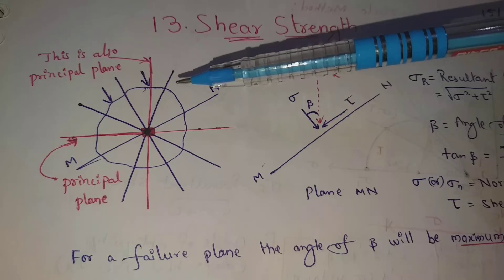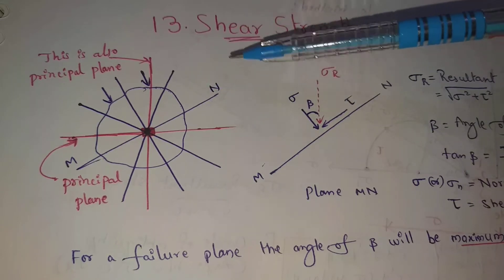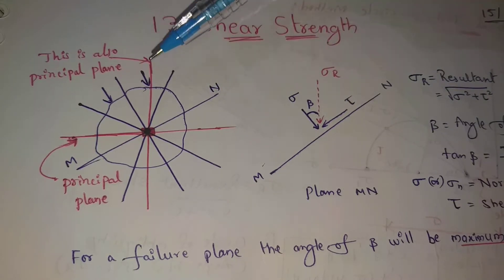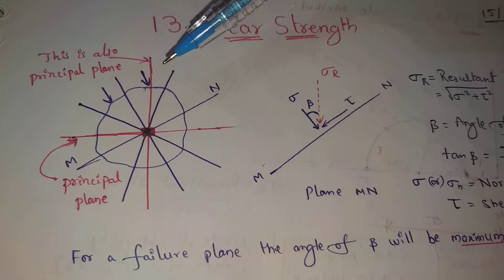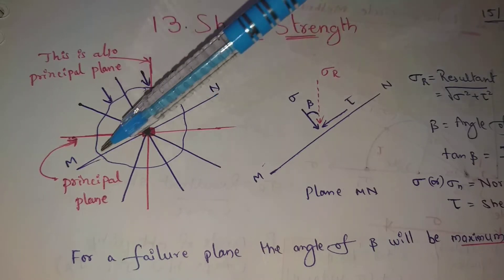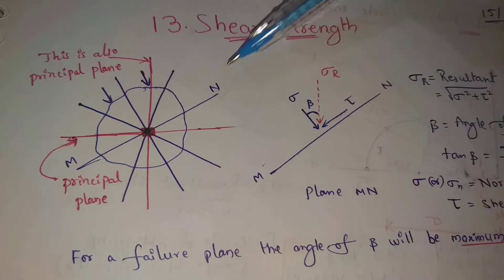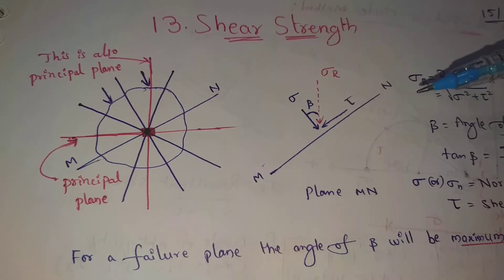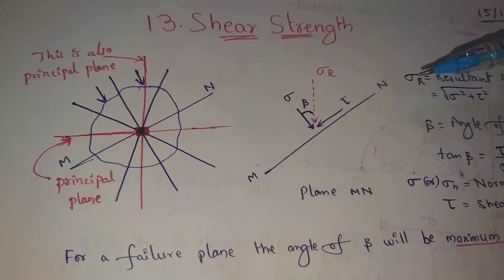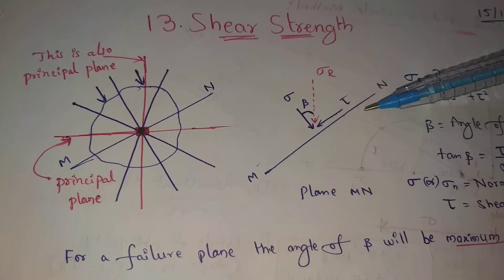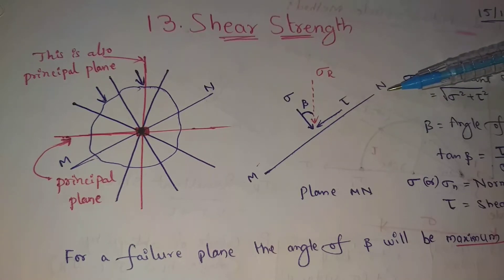Consider a soil sample. The red lines are principal planes. This is the MN plane — plane MN — for which we will find the shear strength.